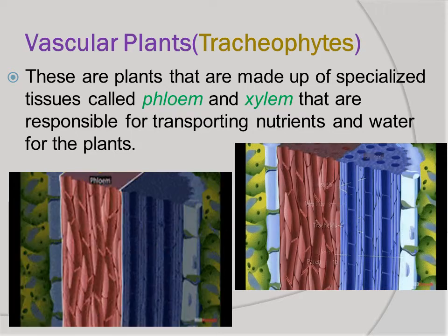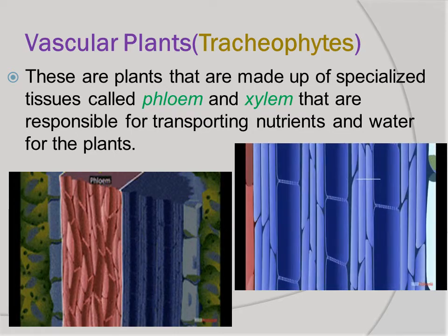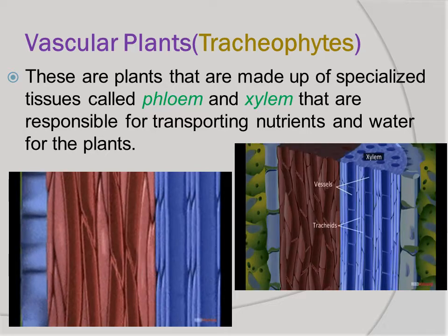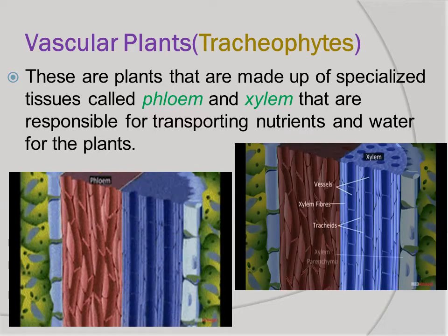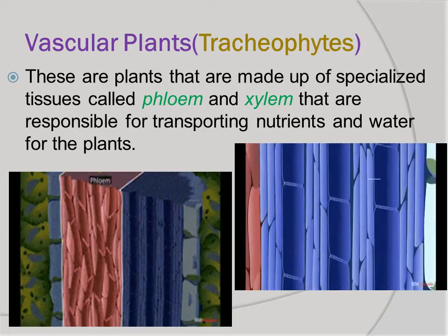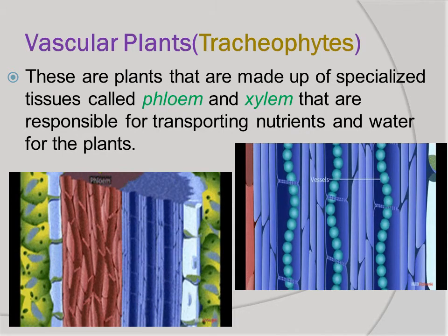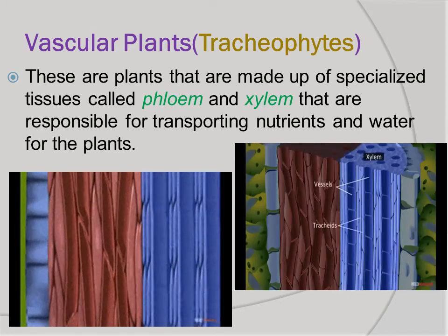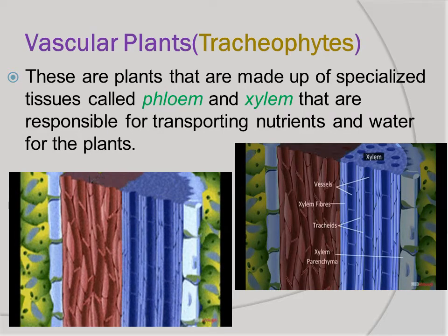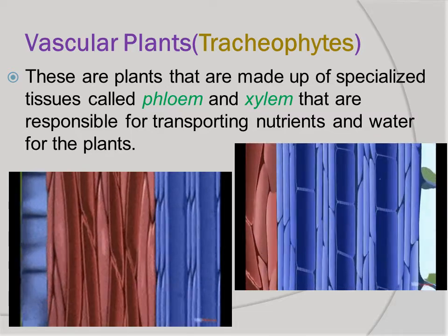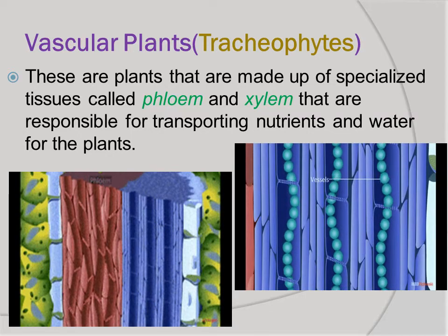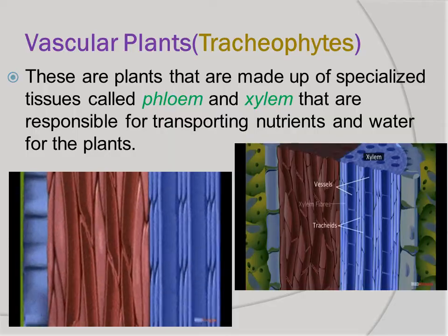Plants are classified as bryophytes and trichophytes. Trichophytes are vascular plants with vascular tissues — these are the xylem and the phloem. Xylem is the water-carrying vascular tissue while the phloem is the main food-carrying tissue. These vascular plants have true roots, leaves, and stems.